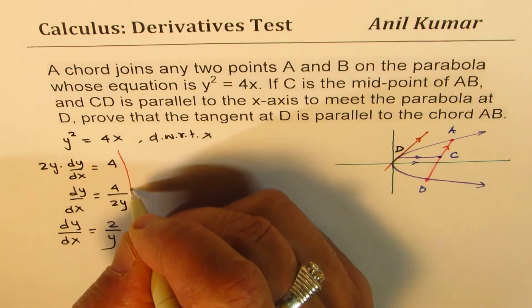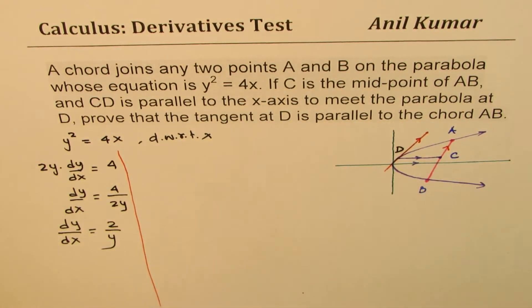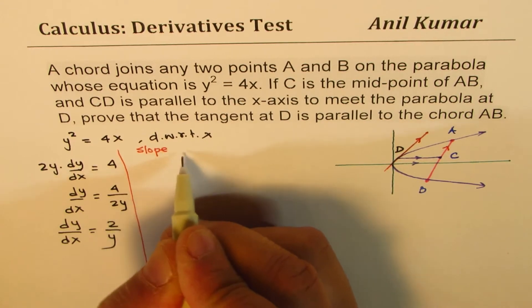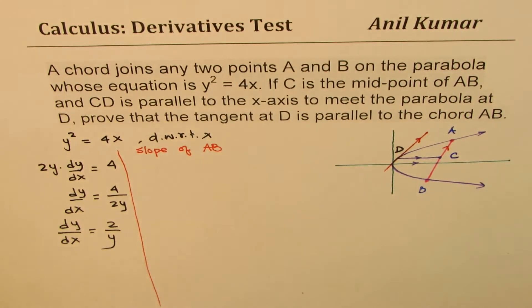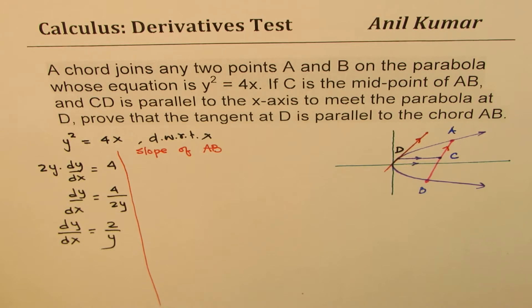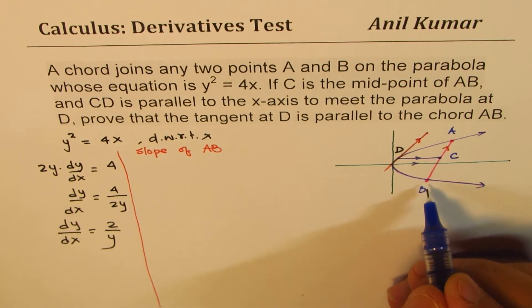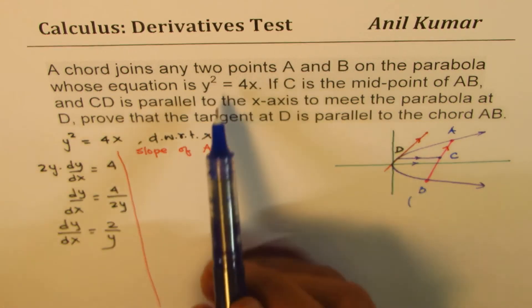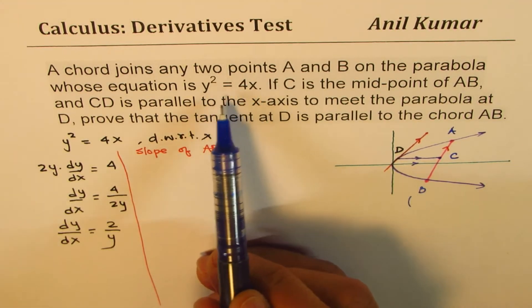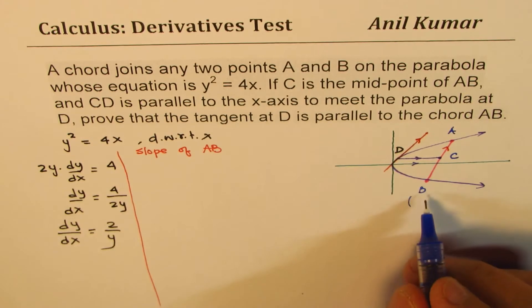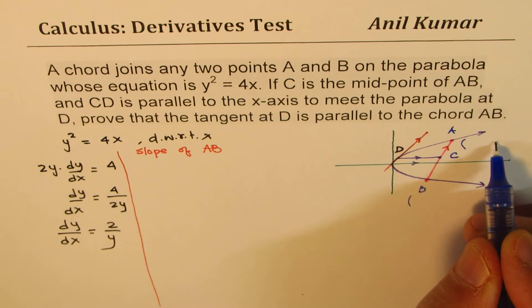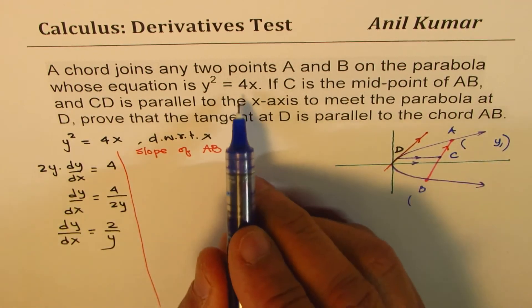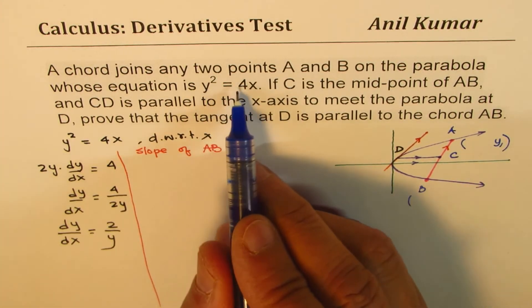Now let's try to see what is the slope of AB. To get the slope of AB, I will suggest that let's take two points. Since the equation is given in this form, I prefer to write y₁ for the y value, so the x value will be y₁²/4.